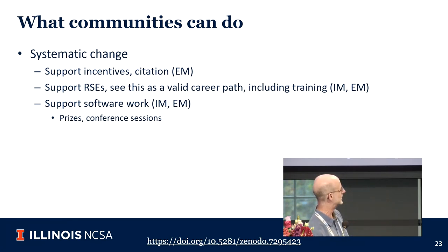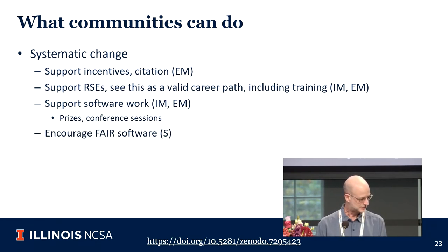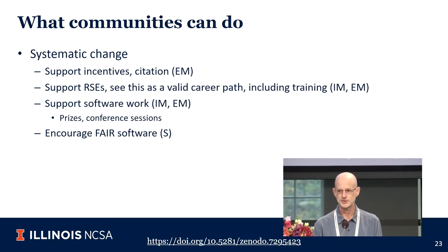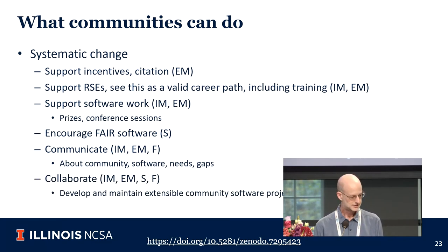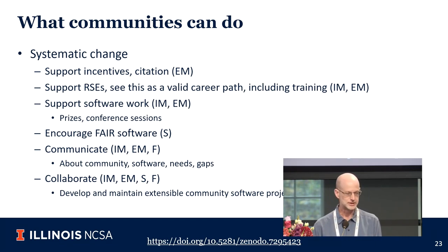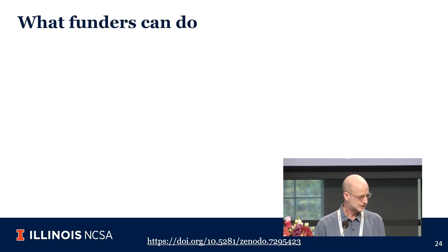Communities can support software work through having prizes, having conference sessions where software is identified and recognized, encouraging FAIR software, communicating about the community and about needs for new software and gaps, and encouraging collaboration by thinking about how different communities come together and work on software. Astropy is one of the really nice examples of a community coming together and building software collectively, but we'd like to see examples like that in other places as well.